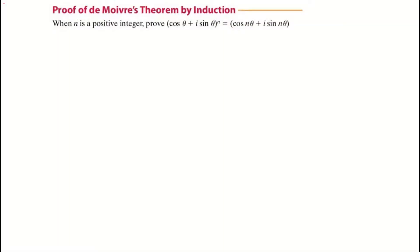In this video we're looking at the proof of De Moivre's theorem. We're going to use proof by induction in order to prove De Moivre's theorem. Proof by induction involves a three-step process. Let's have a look at those three steps before we get into our proof.